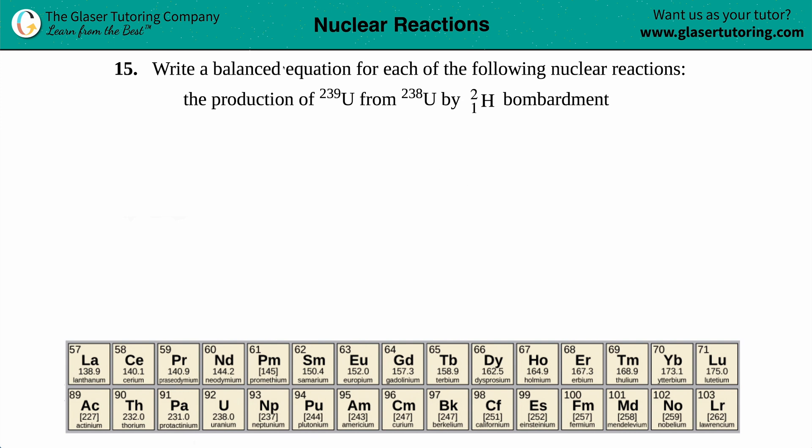Number 15, write a balanced equation for each of the following nuclear reactions. We have to write a balanced equation for the production of U-239 from U-238 by H-2 bombardment.